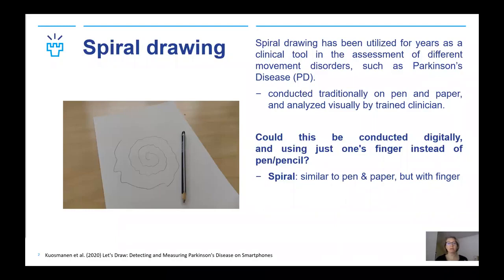Spiral drawing has been utilized for years as a clinical tool to observe tremors and other abnormal movements in the assessment of different movement disorders such as Parkinson's disease. It is conducted usually on pen and paper and analyzed visually by a trained clinician, hence it's not utilized that often.